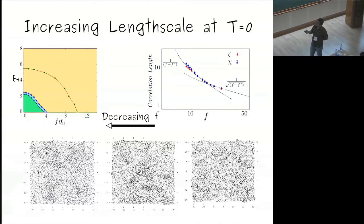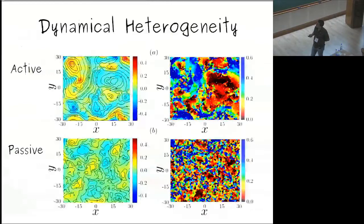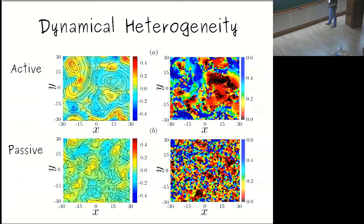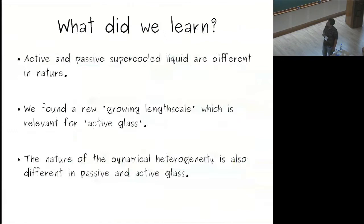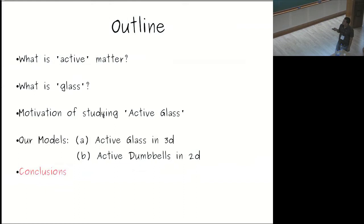The dynamical heterogeneity also looks different, though we have not done a quantitative analysis. Looking at the velocity field and curl field for the active case versus the passive case, slow particles reside within the core of the vortices, while fast particles lie between counter-rotating vortices. So the nature of the dynamical heterogeneity is different. Active and passive supercooled liquids are very different in nature, though we cannot yet say precisely why.